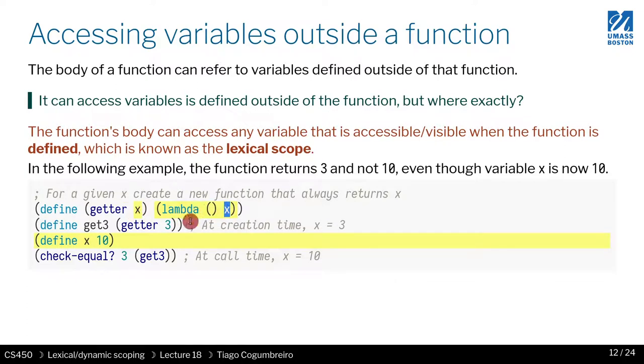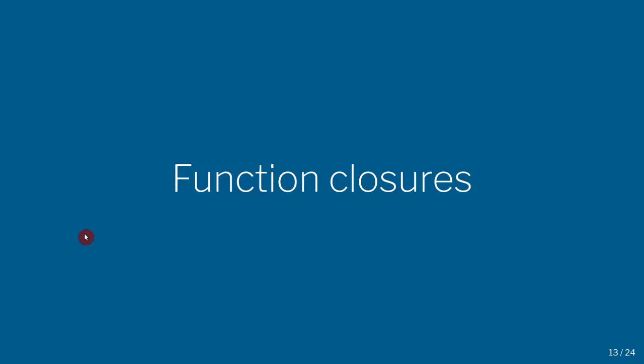...x refers to the parameter. Therefore, when I do instantiate with 3, the internal state is set to 3. At creation time, x is assigned to 3, and therefore it doesn't matter what outside x is defined, because getter is still referring to that internal state that was captured. In the next slide, we're going to go through what is known as function closure or function values and look at it in more detail.